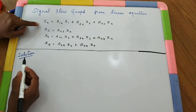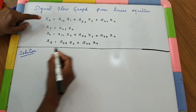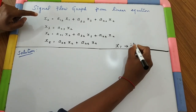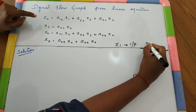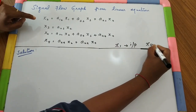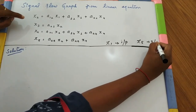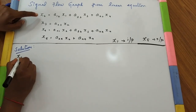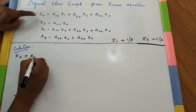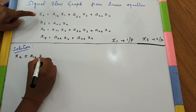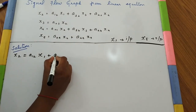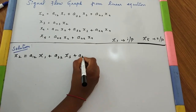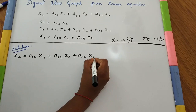Let me take the first equation. We have taken X1 node as the input node and X5 node as the output node. The first equation is: X2 is equivalent to A12·X1 plus A32·X3 plus A42·X4.